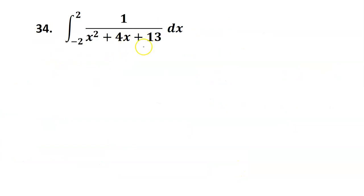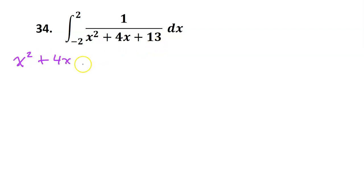Number 34 is special. We know we need inverse trig rules because the degree of the denominator is 2 more than the numerator. However, the integral doesn't look anything like the trig rules, so we need to complete the square to transform this trinomial into a form that more closely matches one of the inverse trig rules. Let's do that extra step off to the side. We have x² + 4x + 13. We need a special number here — 13 is not it, so we bump 13 out of the way. The phrase to remember is: half the middle, squared.